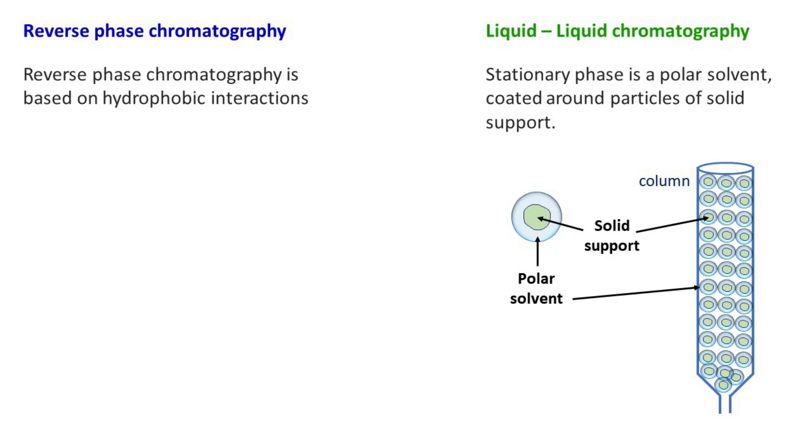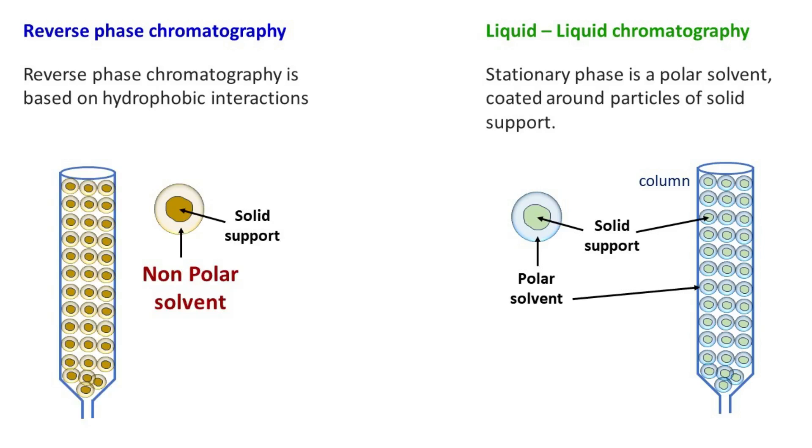Reverse phase chromatography is a liquid chromatography in which non-polar solvent is coated on solid support while the mobile phase is a polar solvent. The solid support usually contains covalently bound alkyl or aromatic side chains. This allows the non-polar solvent to be coated around the support.